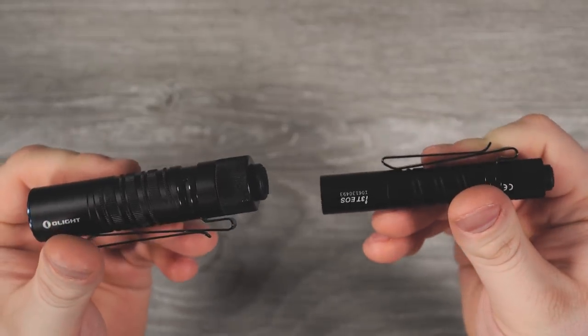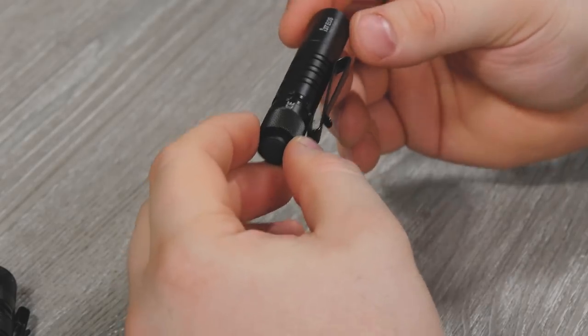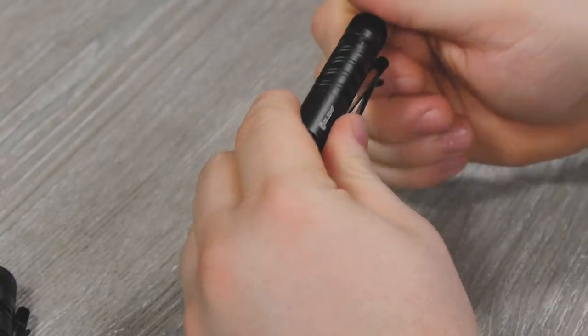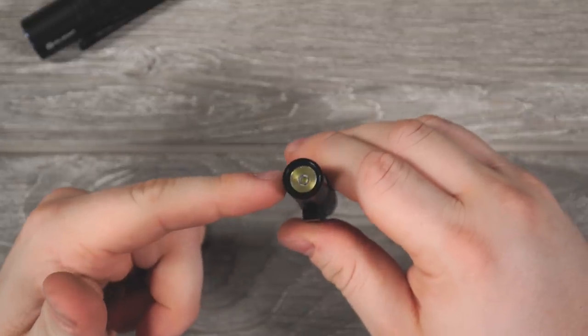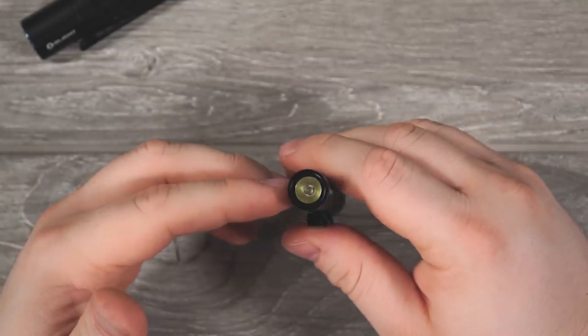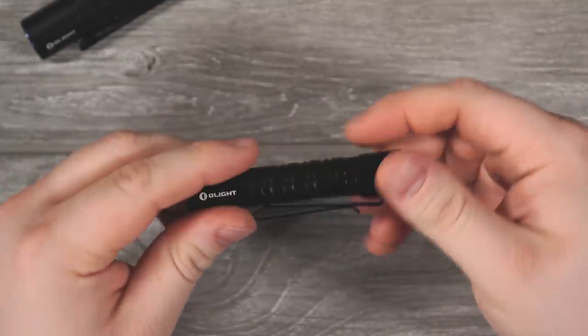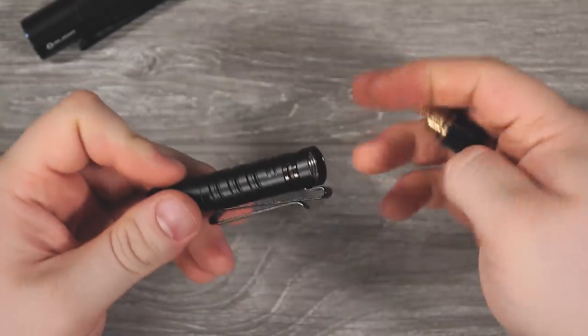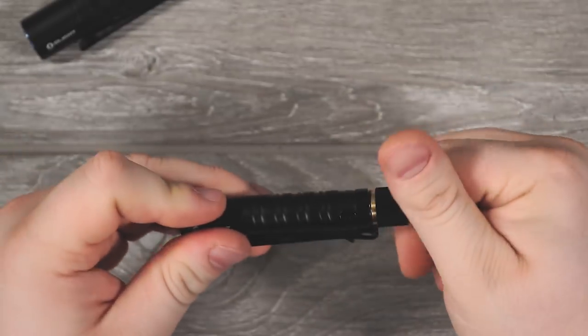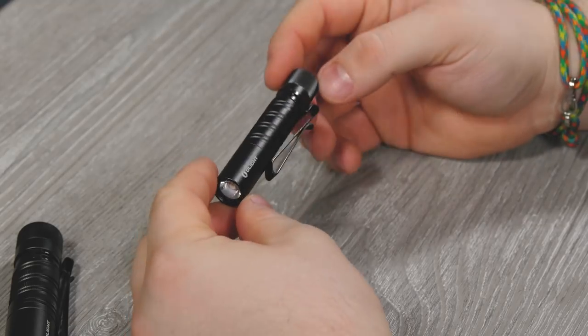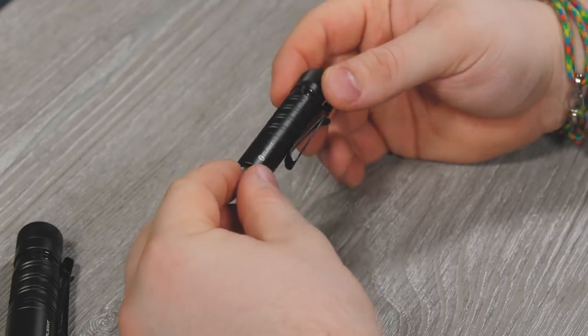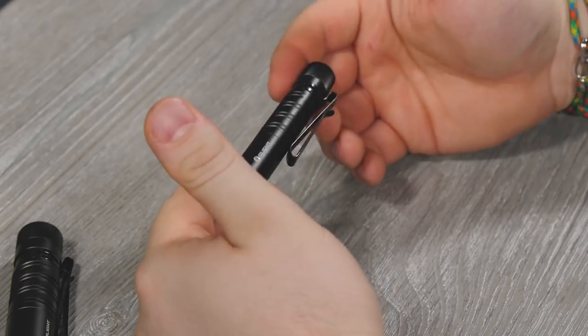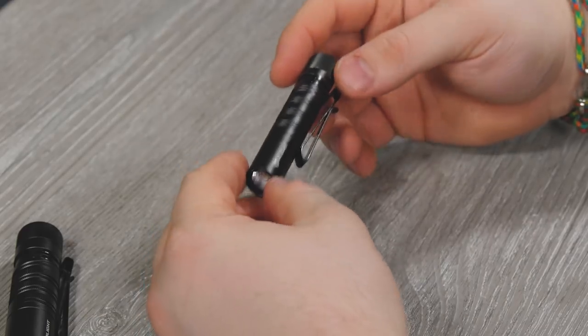The i3T EOS is the smaller sibling to the M1T. It's obviously the older one and it is much smaller in diameter: 0.59 inches or roughly 15 millimeters, so just over half an inch thick. That is because it's powered by a single AAA battery, which is something that a lot of flashlight people love. This one weighs in at just 1.45 ounces, that's 41 grams. Super lightweight, very small, compact, disappears in the pocket.